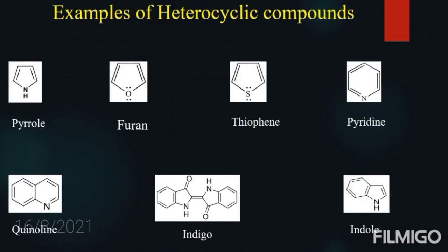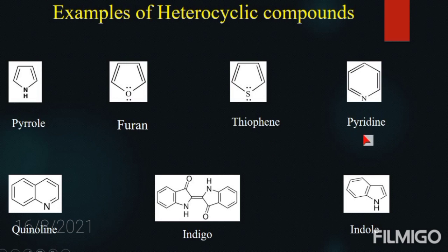Let us see examples of heterocyclic compounds and discuss their classification. Generally, heterocyclic compounds are classified into three types: five-membered ring systems, six-membered ring systems, and fused ring systems. Compounds 1, 2, and 3 are five-membered heterocyclic compounds, since the total number of ring atoms in each case is five — four carbon atoms and one heteroatom: nitrogen, oxygen, and sulfur respectively. Pyridine is an example of a six-membered ring, and penoline, indigo, and indone are examples of fused ring heterocyclic compounds.